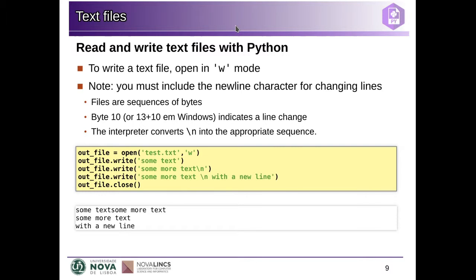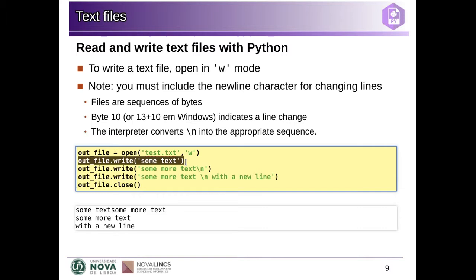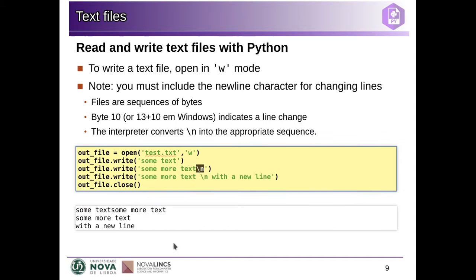If we want to write to a file, then we need to specify that we are using write mode. We need to give as a second argument a 'w' as a string. If you want to write lines of text, you need to add the newline character. Otherwise, things will get stuck in the same line. Remember that a new line of text is simply what happens when the editor meets a newline character. So if we write some text and then write some more text, we get everything glued together. Only when the backslash-n character appears is there an indication for changing to the next line.